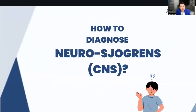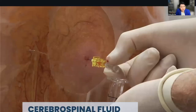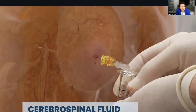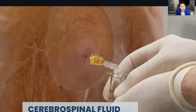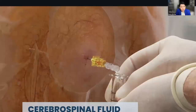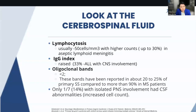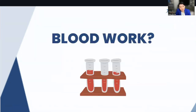How do we diagnose neuro-Sjögren, or Sjögren involving the central nervous system? Cerebrospinal fluid or spinal fluid analysis is very important for the diagnosis of neuro-Sjögren. We can see certain changes like elevated lymphocytes, elevated IgG index, but fewer oligoclonal bands. We'll talk about that in a little bit, and we also do blood work.